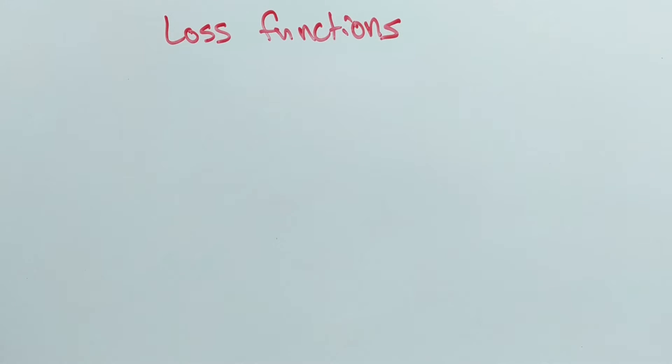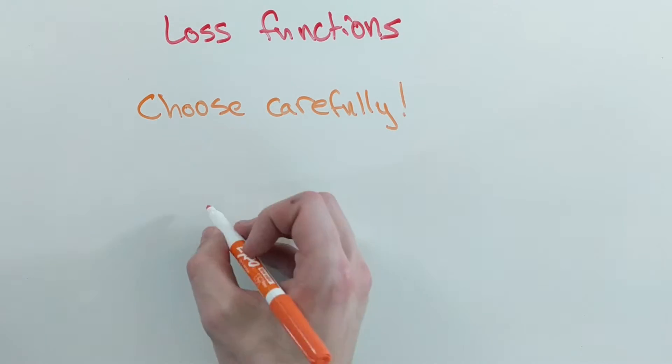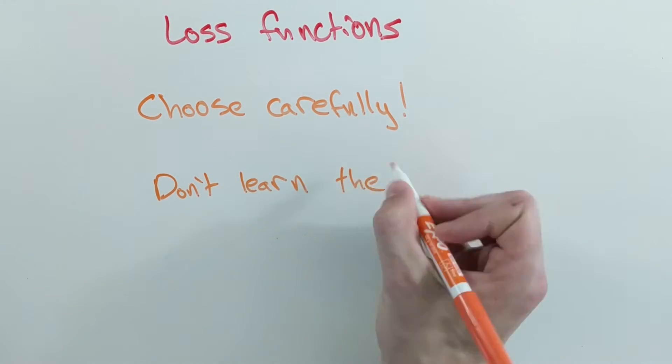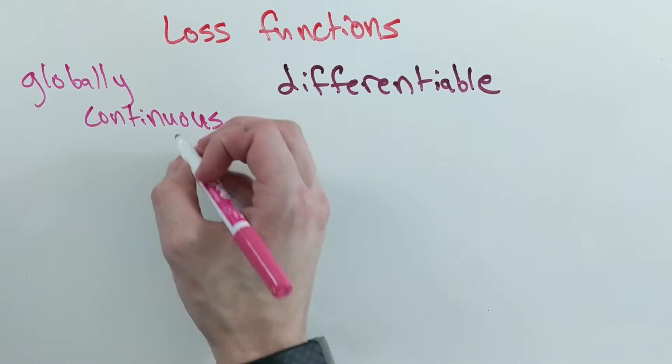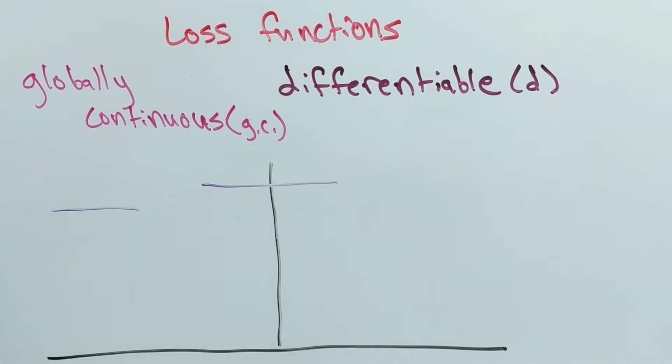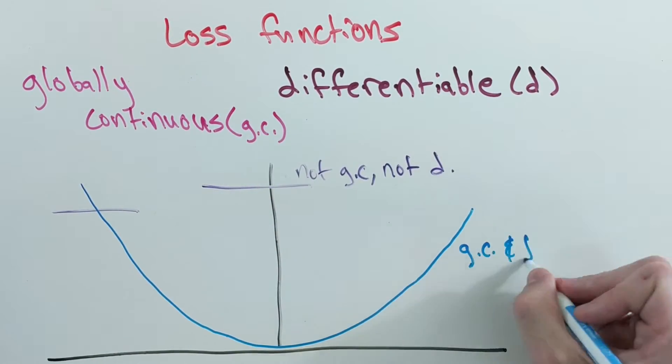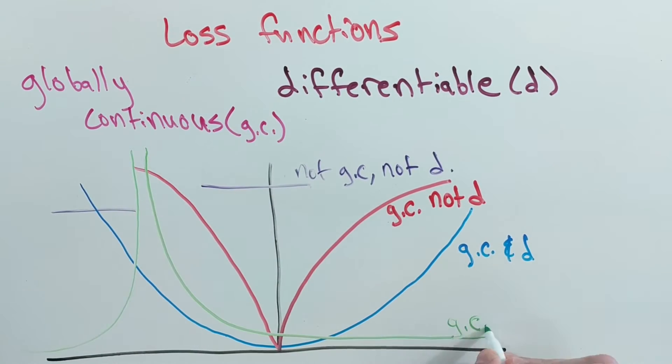As a side note, it's important to choose a good loss function. If you penalize the wrong things, then your model could not learn at all, or worse, learn the wrong thing. In general, loss functions have two properties: they are globally continuous and differentiable. This basically just means that the function you use can't jump, it's defined at every point, it has no sharp turns, and no vertical tangents.